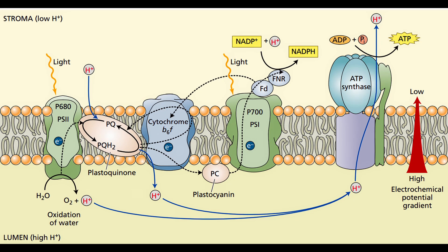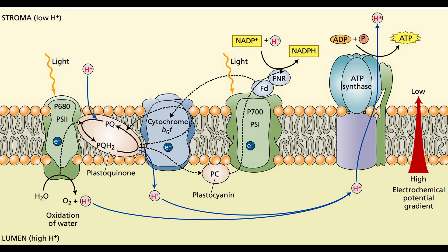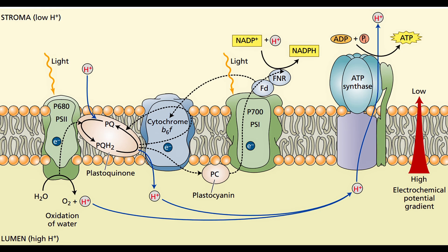This diagram is of the thylakoid layer where you see photosystem 1 and 2 embedded in a perfect manner. Before discussing this diagram, let's see how the antenna complexes and reaction center play their role for gathering light and directing them toward photosystem 2.